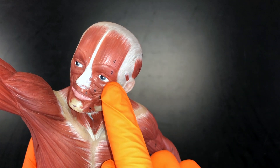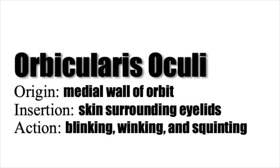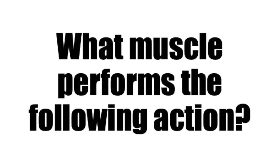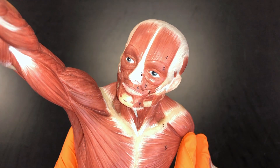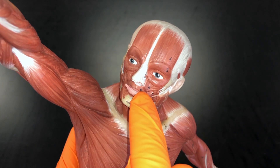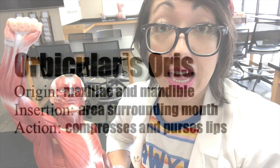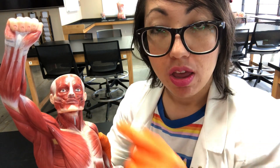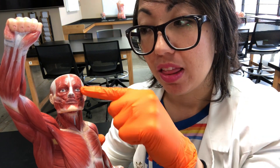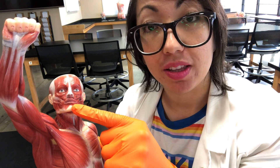The orbicularis oculi and the orbicularis oris are circular muscles, meaning that the fibers are concentric — they go in a circular fashion, which is what a sphincter muscle is. Whenever a circular muscle contracts, it will close. So when the orbicularis oculi contracts, we are winking, blinking, or squinting. And when the orbicularis oris closes, we are closing the mouth or pursing our lips.